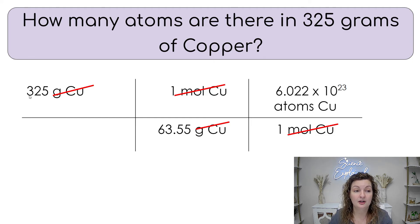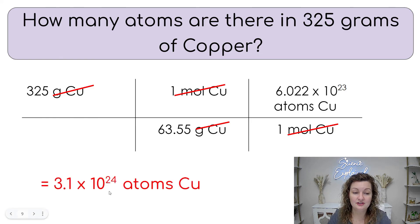So in your calculator, you would type 325 times one times Avogadro's number and then get an answer. And then on the bottom, you would do 63.55 times one, which is just 63.55. And then you would do the top answer divided by the bottom answer. And you would end up getting 3.1 × 10^24 atoms of copper. And this is rounded, just to note that.